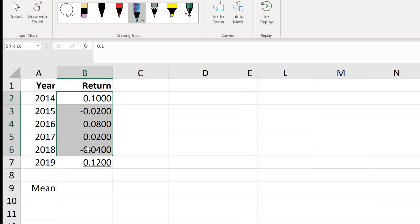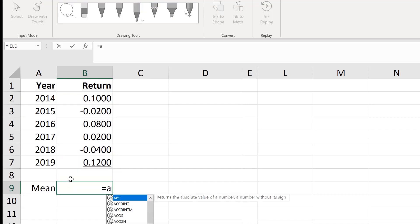divide by six, and we have the mean. I'll use the average function in Excel.